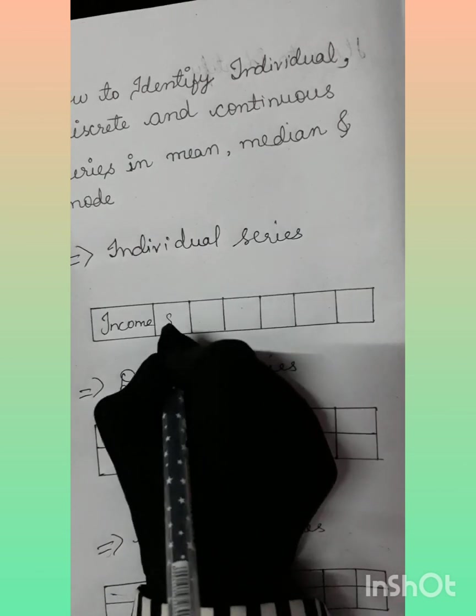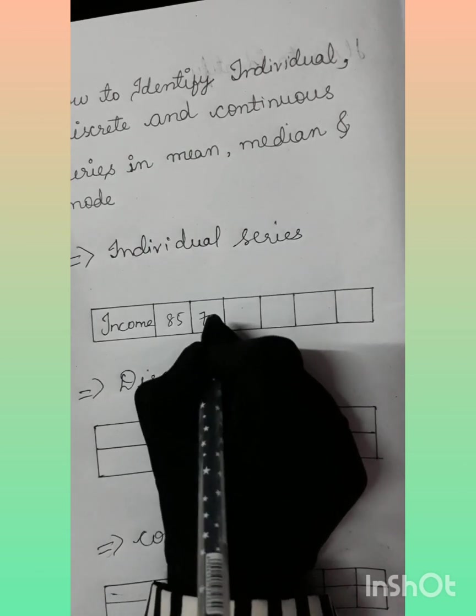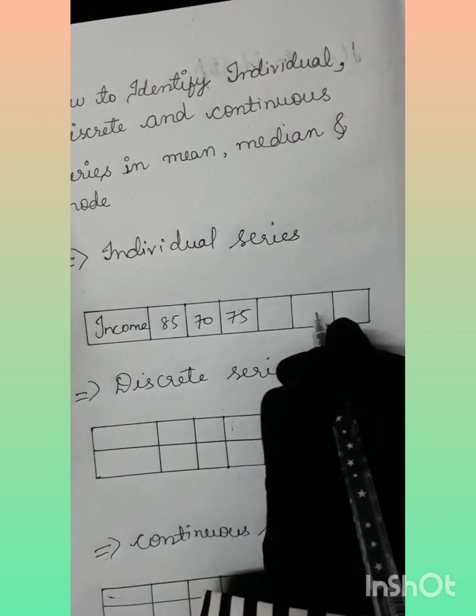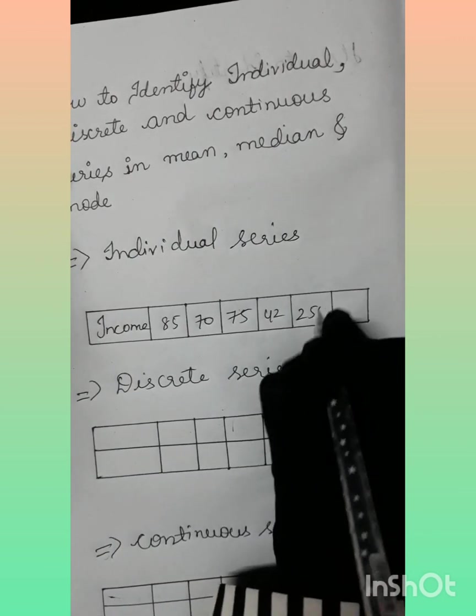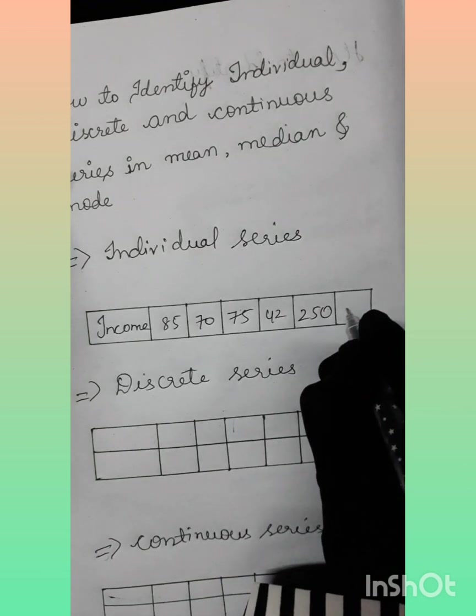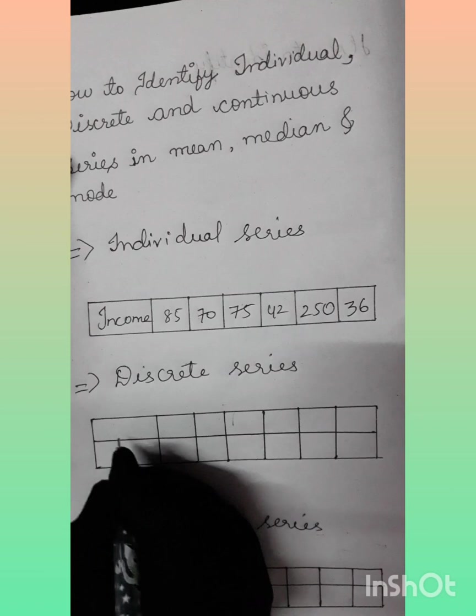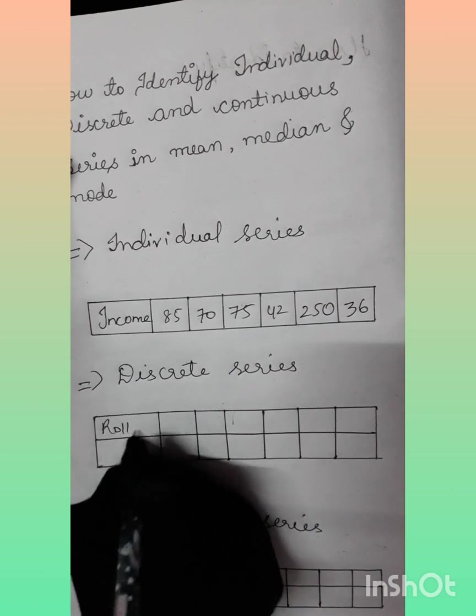If the question is about mean and we have only one line, then we can say it is an individual series in mean. The formula will be: mean equals sigma x by n. As I said, formulas are based on the series type.